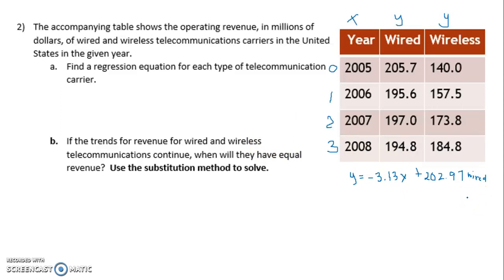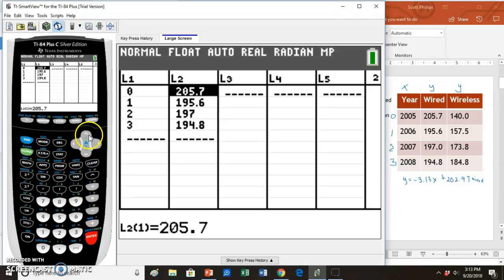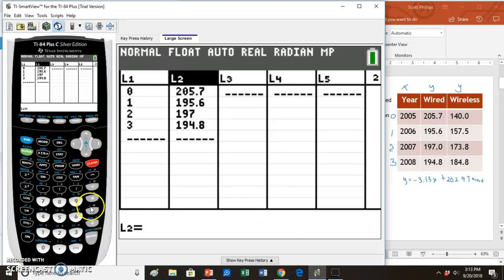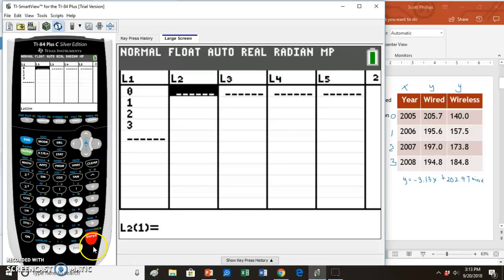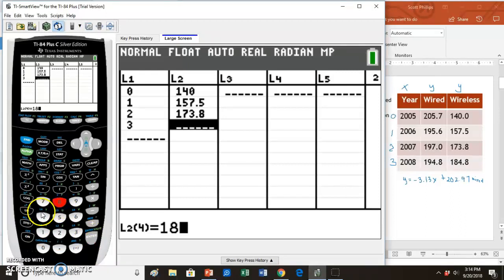I am going to go right back to my calculator to find a regression equation for the wireless technology as well. In order to find my new equation I'll go to my stat, choose enter to edit. I only need to change the values in list 2. I'll arrow up, hit clear, and enter. And now I'll type the wireless values. So I have 140, 157.5, 173.8, and 184.8.